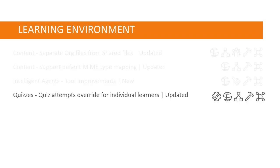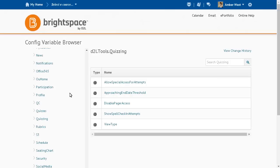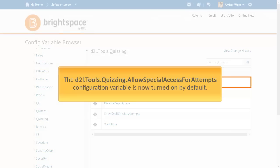The configuration variable associated with instructors' ability to specify a different number of quiz attempts allowed for individual learners is now turned on by default. In the config variable browser, D2L Tools Quizzing Allows Special Access for Attempts is now turned on by default.